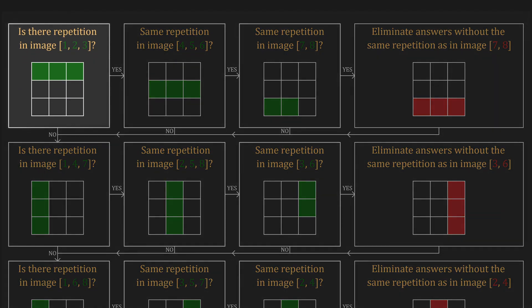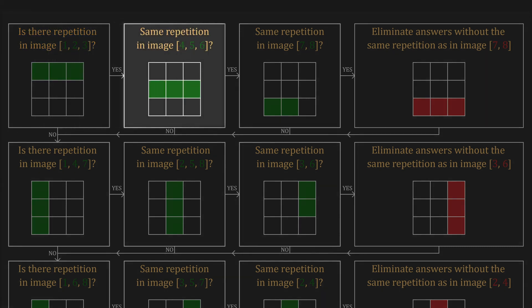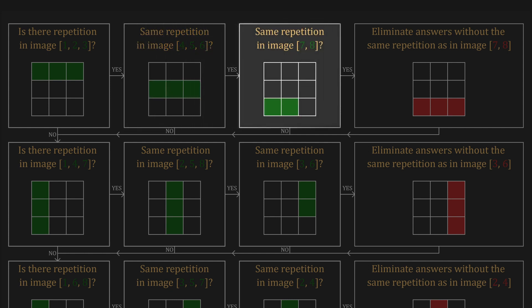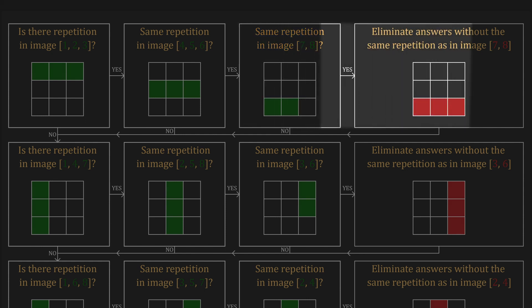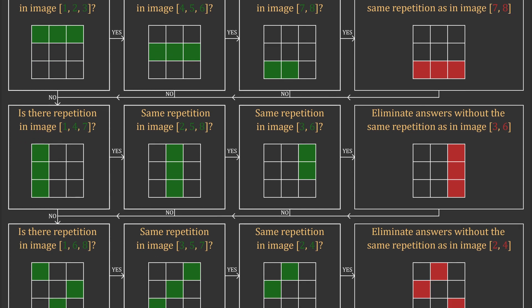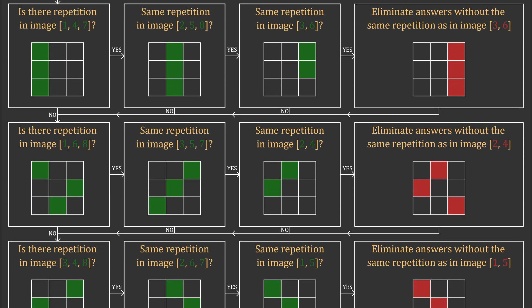We start in the top left with the question: is there any repetition in the first row? If there is repetition, we check the second row to see if it has the same type of repetition as the first row. If so, we check the two first images of the third row for the same type of repetition. If we have the same type of repetition in all three rows, we can eliminate any answer that doesn't follow that pattern. After the rows, we look at the columns, which work exactly the same way.